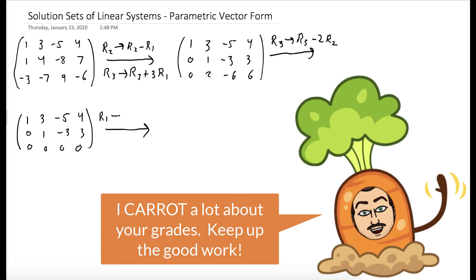So now we're in row echelon form. We want to be in reduced row echelon form, so we can eliminate the 3 in the second column.